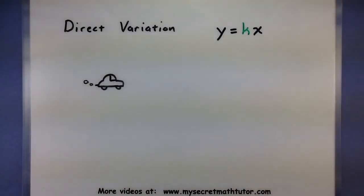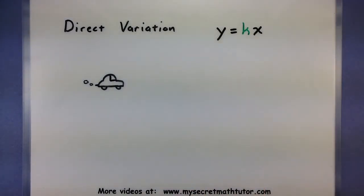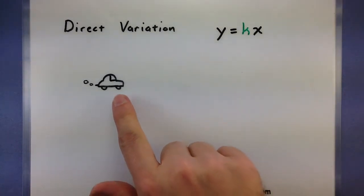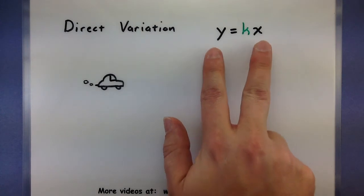For direct variation, this is a connection between two variables such that one is a constant multiple of the other. Now if that doesn't make a whole lot of sense, here's a good example that you can chew on for a little bit. Suppose you are driving a car and you're looking at the relationship between how long you've been driving and maybe how far you've gone. Those would be your two variables.